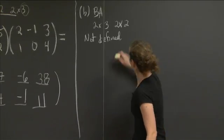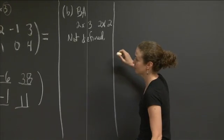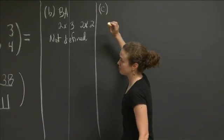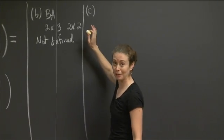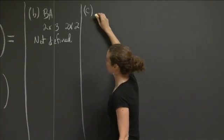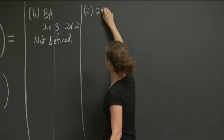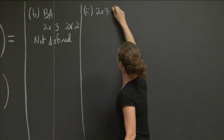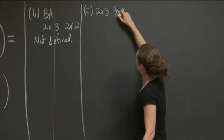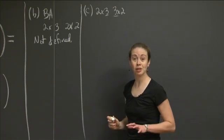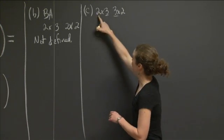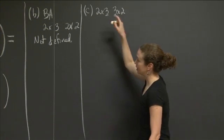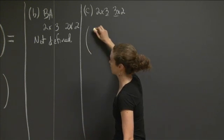All right. Letter C, I'll give myself a lot of room to do that. Letter C was B times C, and so I'm going to write down the dimensions to see if I even need to write down the matrices. B was 2 rows by 3 columns, and C was 3 rows by 2 columns. So if I look at the dimensions, the 3 and the 3 match up. So I am going to be able to multiply them, and my result, as I mentioned before, should be a 2 by 2.